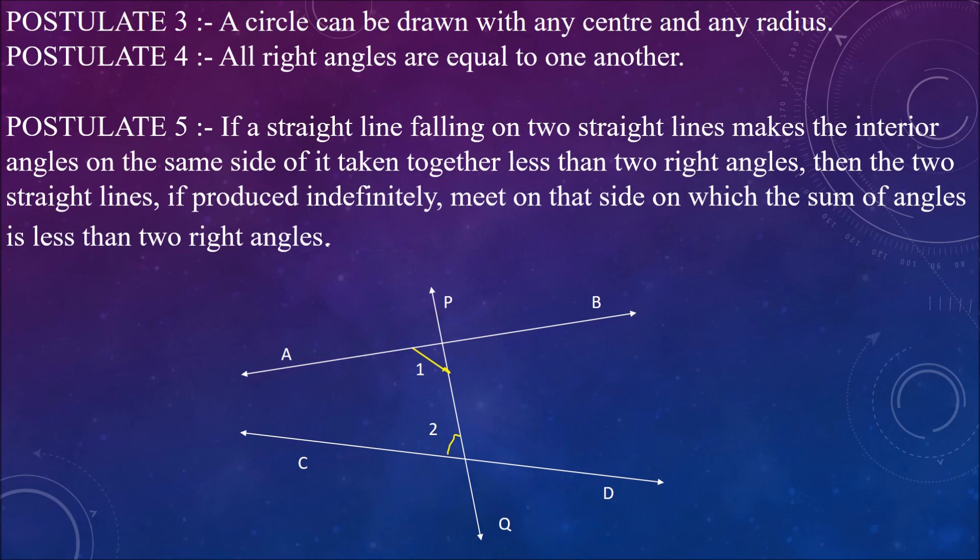For example, in this figure, line PQ falls on two lines AB and CD such that angle 1 plus angle 2 is less than 180 degrees on the left side of PQ. Therefore, the lines AB and CD will intersect on the left side of PQ.